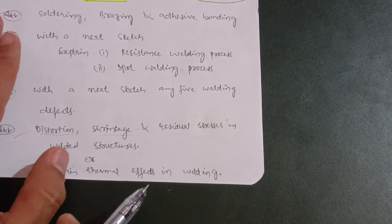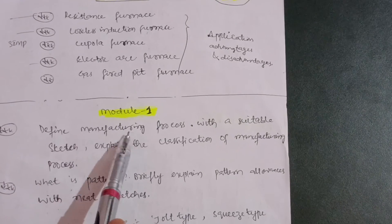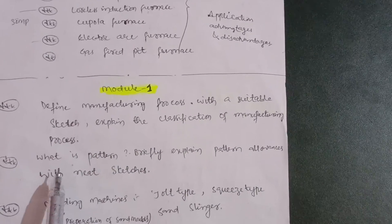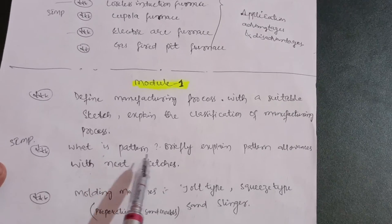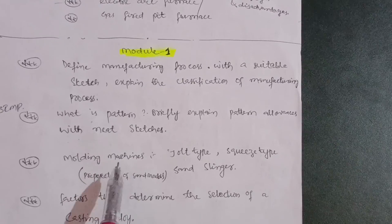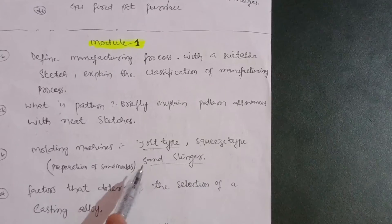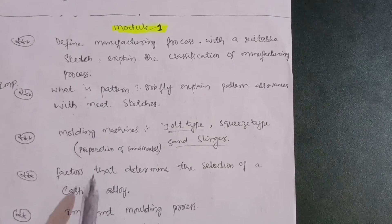Now let me discuss Module 1, which is not a passing module but you need to cover two to three questions from it. First: define manufacturing process and explain the classification of manufacturing processes with a suitable sketch. Next: what is a pattern — a super important question — briefly explain pattern allowances with neat sketches. Also focus on molding machines: jolt type, squeeze type, and sand slinger, including the preparation of sand molds using these machines.